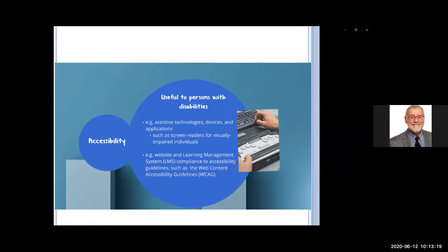Accessibility refers to the ability of a website, mobile application, or electronic document to be easily navigated and understood by a wide range of users, including those with visual, auditory, motor, or cognitive disabilities. This includes assistive technologies such as screen readers for visually impaired individuals, and website and LMS compliance with accessibility guidelines like the Web Content Accessibility Guidelines. Many learning management systems and websites are not compatible with these guidelines — we need to familiarize ourselves with them as we move to e-learning.